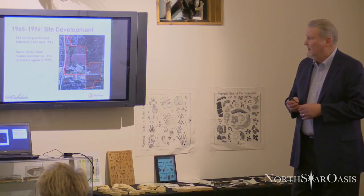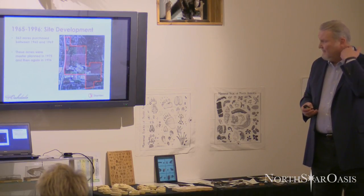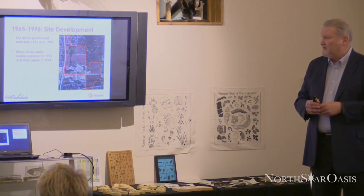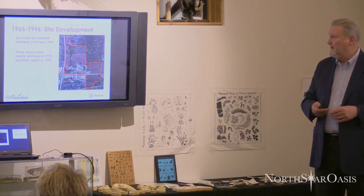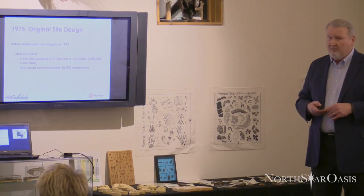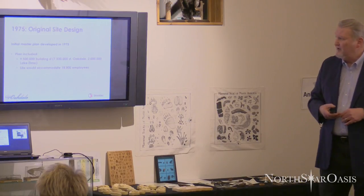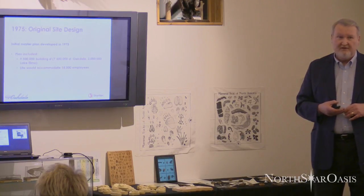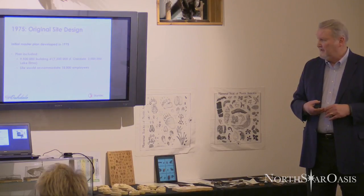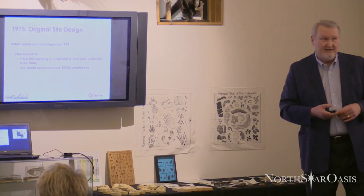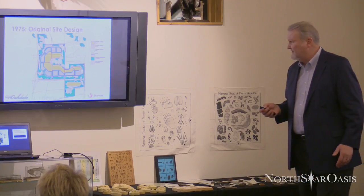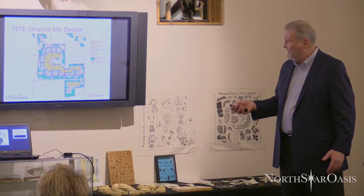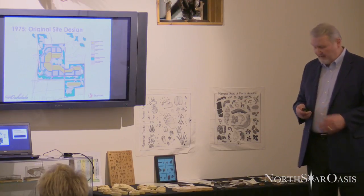The site history: back in 1965, originally 563 acres were purchased and master-planned in 1975 and again in 1996. I actually reviewed the environmental impact statement for the city back in 1996 when it was planned for the I-Mation campus. The initial master plan approved called for 9,500,000 square feet of buildings — 7,500,000 square feet in Oakdale and 2 million in Lake Elmo — and would have included 18,000 employees, essentially another 3M on this site. That original 1975 site design showed buildings in an elongated C-shape with parking bays all around.